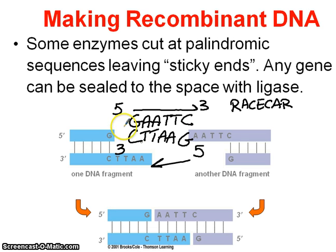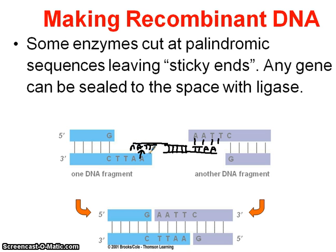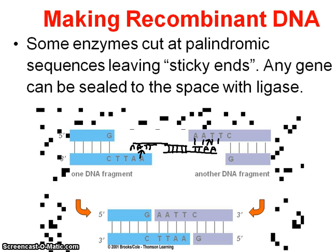What will happen is, when this enzyme cuts, it will specifically cut at that particular sequence every time it finds that sequence and only that sequence, and it's going to create what are called sticky ends. In other words, if we can find any other DNA we want, as long as that DNA ends with T-T-A-A on one side and A-A-T-T on the other, they'll be attracted to each other, and we can splice and put any gene we want into this particular DNA segment.